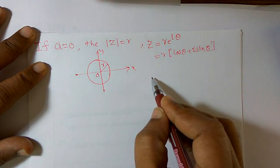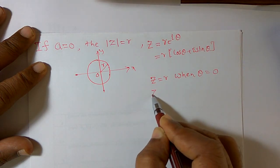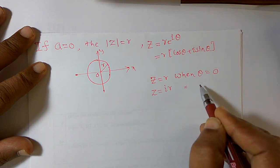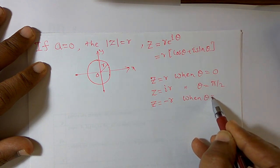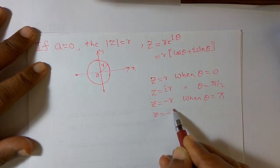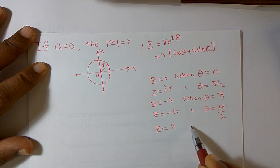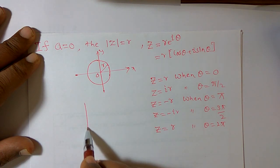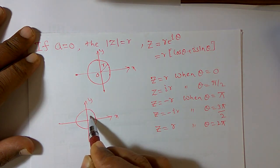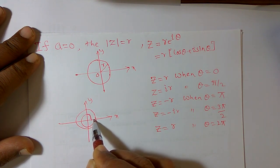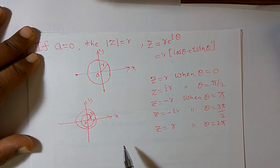What about theta? When theta equals 0, z equals r. When theta equals pi by 2, z equals ir. When theta equals pi, z equals minus r. When theta equals 3 pi by 2, z equals minus ir. When theta equals 2 pi, z equals r again — you complete one full rotation. You can trace out the x-axis and y-axis values as theta varies, with r as the radius from the origin.